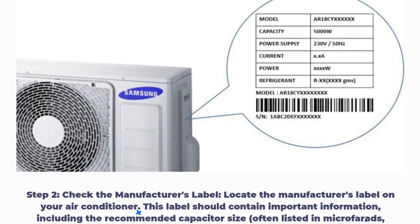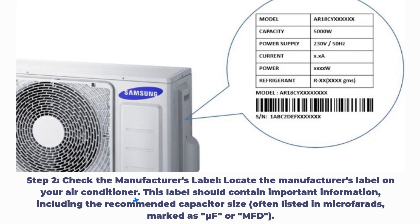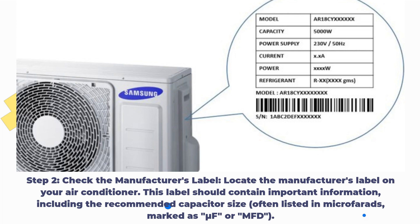Step 2: Check the manufacturer's label. Locate the manufacturer's label on your air conditioner. This label should contain important information, including the recommended capacitor size, often listed in microfarads, marked as microfarad or MFD.